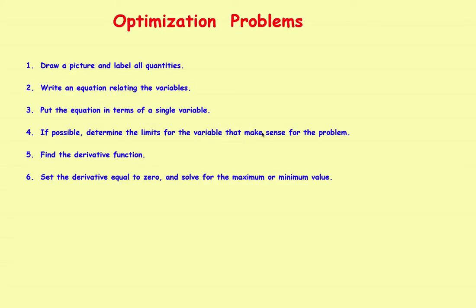Let's take a look at a third optimization problem. The first problem found a maximum area, the second found a maximum volume. In this third problem, remember optimization works for both maximums and minimums — so here we'll actually find a minimum length. We'll still use the same six steps as before. If you haven't already, I'd recommend watching the first and second optimization examples first.